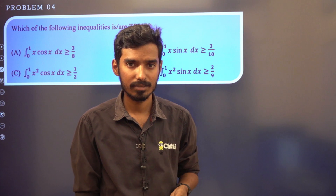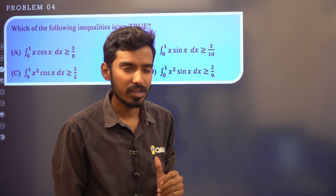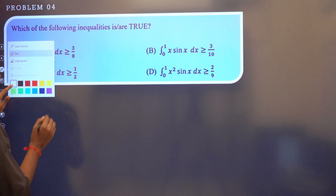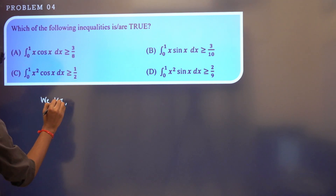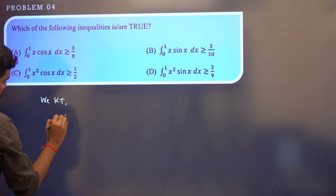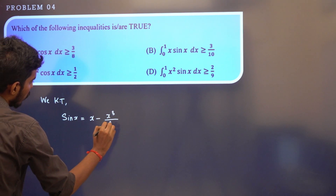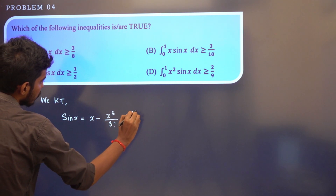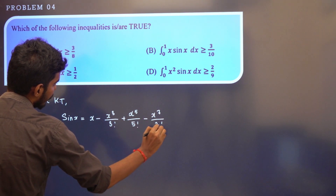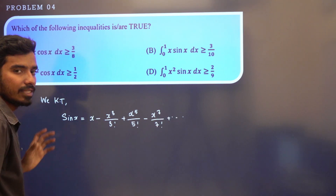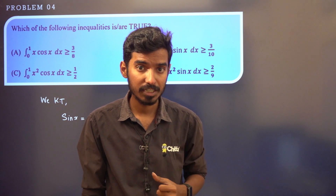Using the McLaurin series, the expansion of sin x about x = 0 is: sin x = x − x³/3! + x⁵/5! − x⁷/7! + ... This is the expansion of sin x.